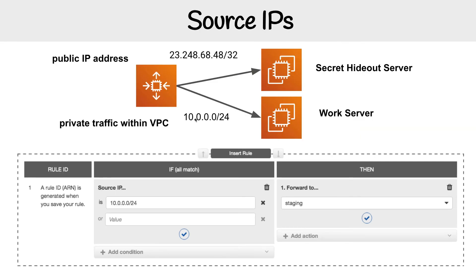Let's look at source IP. Source IP is about where the traffic is coming from based on IP address. Let's say we have a VPC with an ALB running in it and we have traffic within our VPC accessing other services, and we also have a public IP address — let's say our home address — which is a single address coming in and hitting that ALB.